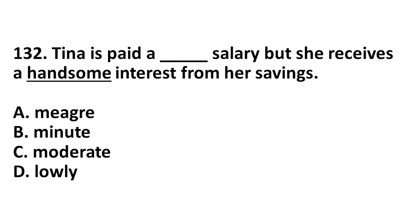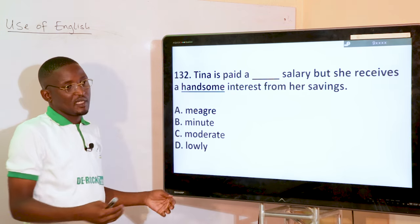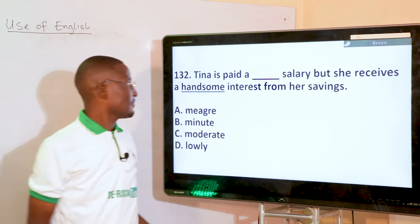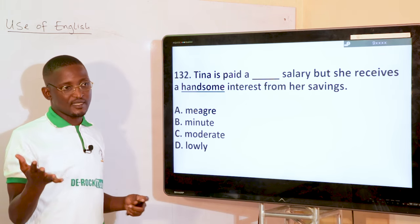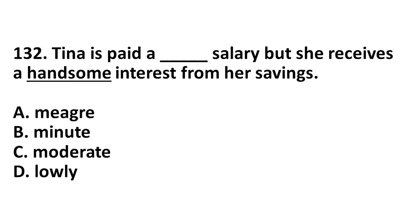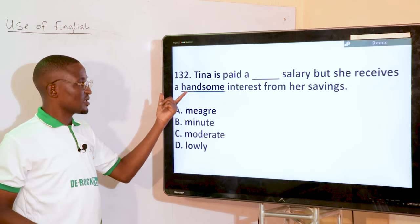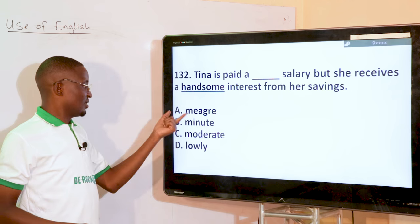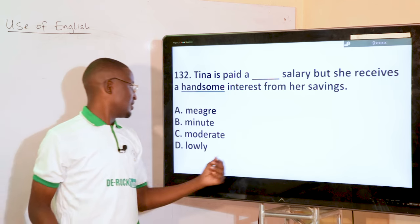Tina is paid a dash salary, but she receives a handsome interest from her savings. You can see the word 'handsome' used here — it may mean good-looking, but it is used for interest or a form of money. So context matters. 'Handsome' here can be replaced with 'huge,' so its opposite would be 'mega' meaning small.